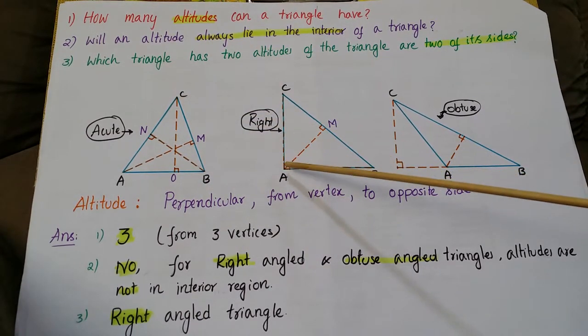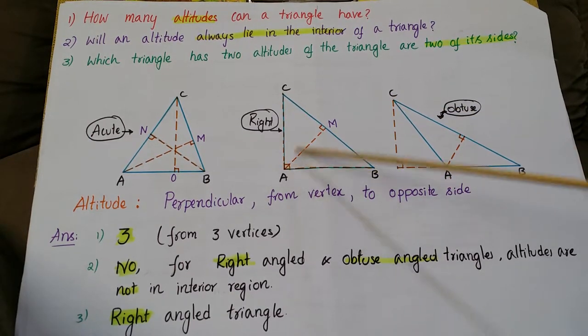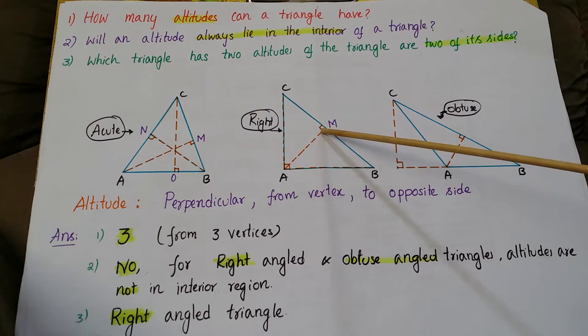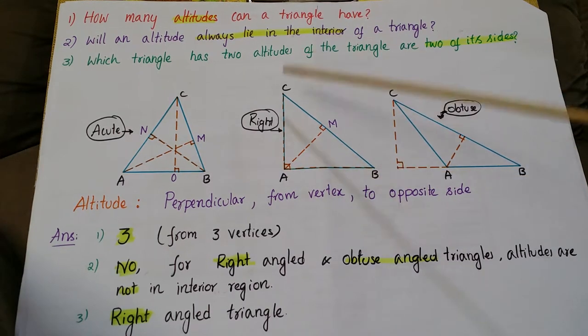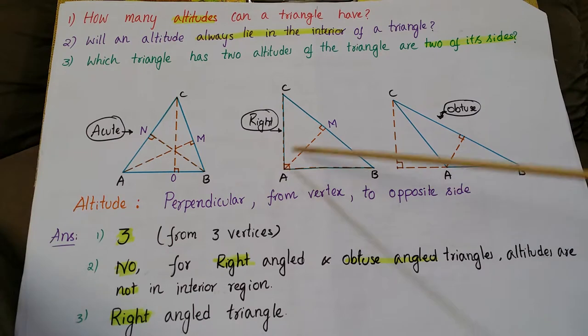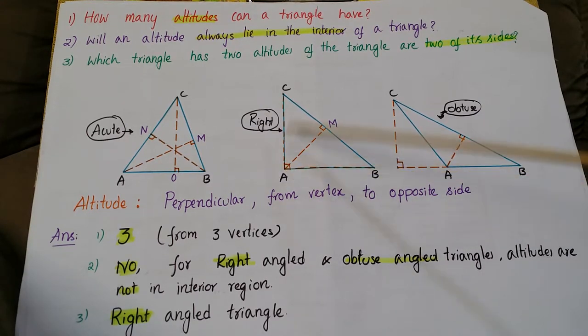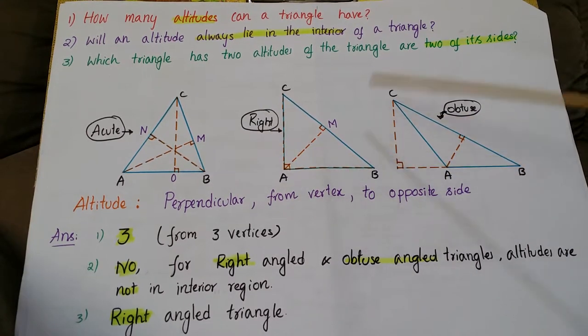This is right angle triangle. The altitudes are the sides itself. See here, this is an altitude. AM is an altitude from vertex A. From B and C, we can draw the altitudes here. These are the sides itself.